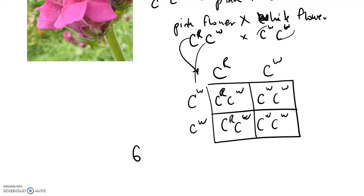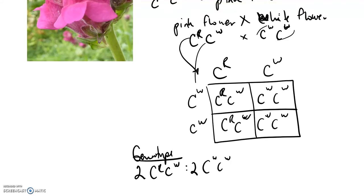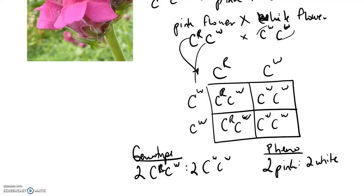Looking at the genotypic ratio, we have two to two, or 50% each. Looking at the phenotypic ratio, we have two pink to two white, or 50% each. The Punnett square works the same way — you just have to remember that in this case, we don't have one trait that's completely dominant over another trait.